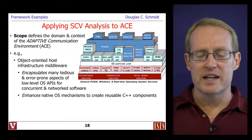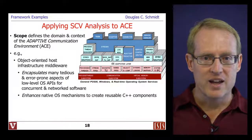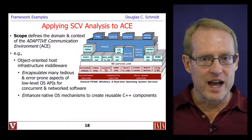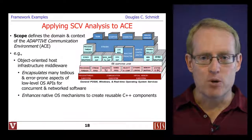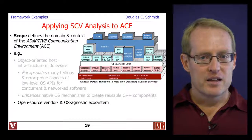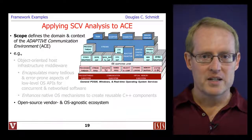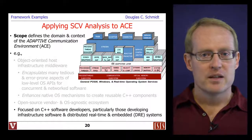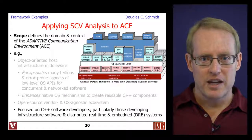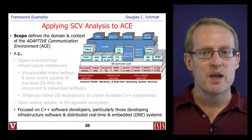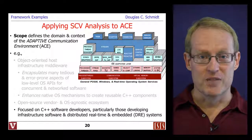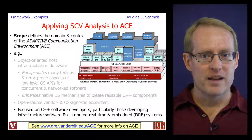ACE encapsulates the tedious and error-prone aspects of programming on different operating systems by refactoring and providing a portability facade. It also provides a way of encapsulating and enhancing the C APIs with easier to program, easier to compose, and easier to understand object-oriented C++ interfaces — things called wrapper facades. Like Android, ACE is also available completely in open source form, with a vendor and hardware and operating system agnostic ecosystem. The main difference is that ACE is focused on C++ developers building infrastructure software, middleware, and applications for distributed real-time embedded systems where the right answer delivered too late becomes the wrong answer.